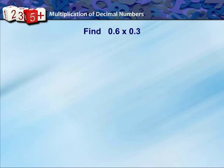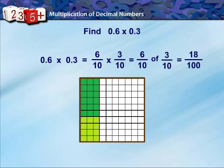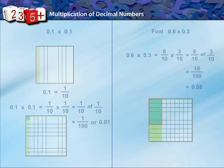Now, let us find 0.6 into 0.3. We get 0.6 into 0.3 equal to 6 upon 10 into 3 upon 10, or 6 upon 10 of 3 upon 10. Here we see that 18 out of 100 is the answer and it can be represented as 0.18.